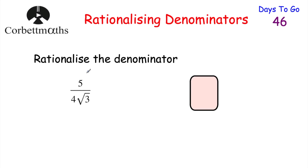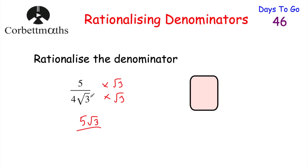Let's have a look at our next question: rationalize the denominator of 5 over 4 root 3. Looking at this fraction, the denominator is irrational — we've got 4 lots of root 3 — so we don't want root 3 on the denominator. We can multiply both the numerator and the denominator by root 3. So on the numerator we've got 5 times root 3, which gives 5√3, and on the denominator we've got 4 lots of root 3 times root 3.